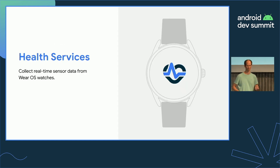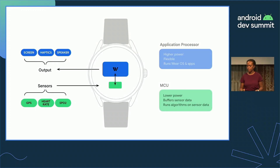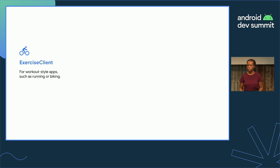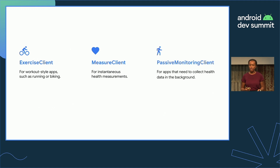Now to HealthServices. HealthServices provides apps with high-quality health and fitness data through access to sensors and related algorithms. By taking advantage of modern smartwatch architecture, it can do this in a way that consumes less power than alternative APIs. HealthServices has three clients: exercise client, measure client, and passive monitoring client. Exercise client is for workout metrics like distance, heart rate, and speed — it also provides aggregates like average heart rate and max pace, all built in. Measure client is for short-lived rapid sampling, and depending on the capabilities of the device, you can measure things like heart rate or even blood oxygen levels. Passive monitoring client offers a way to collect all-day metrics like step count to contribute to things like daily goals.